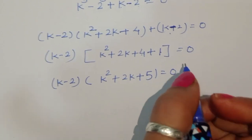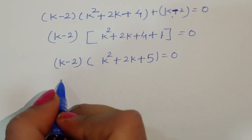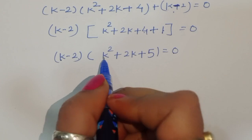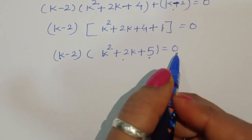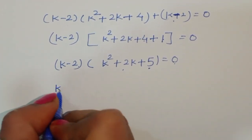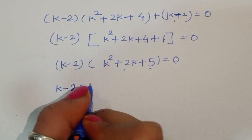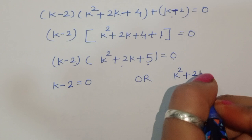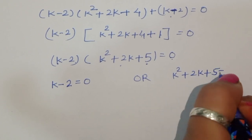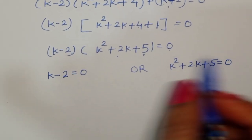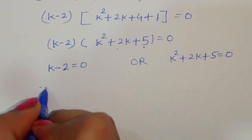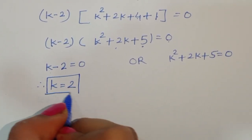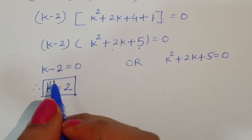We get two equations. The first equation is k minus 2 equals 0, and the second is k squared plus 2k plus 5 equals 0. From the first equation, k minus 2 equals 0, therefore k equals 2. This is the first value of k.